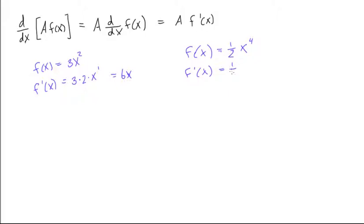just keep the 1 half in front, 1 half times, now bring the 4 down, times 4x cubed, which is equal to, well we can reduce this to, divide that by 2, and 2, and we get, equals to 2x cubed.